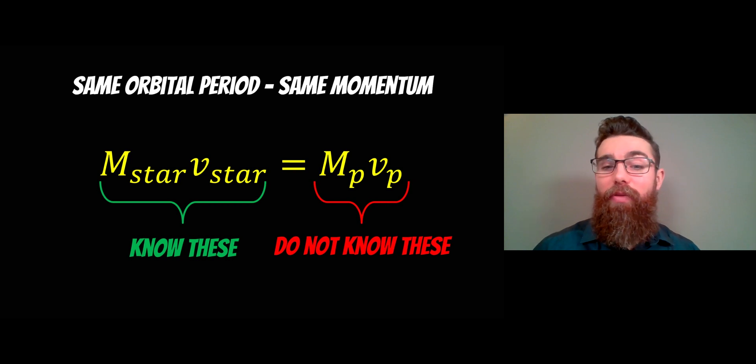Now we know the mass of the star and the velocity of the star. You can measure the velocity of the star. The mass of the star we can get from other methods which I looked at in some other videos. So now we need to work out the velocity of the exoplanet before we can work out the mass of it.